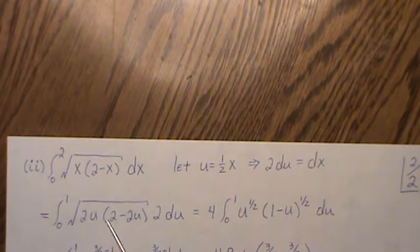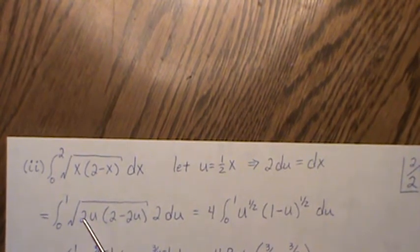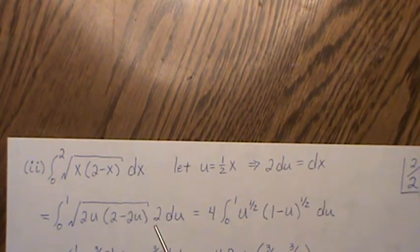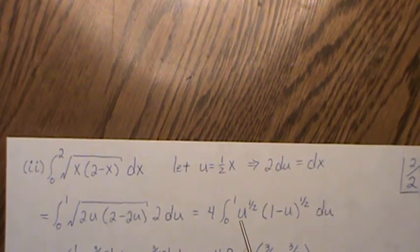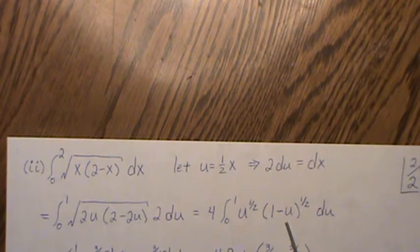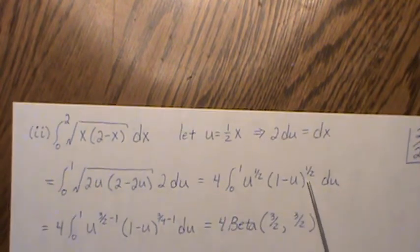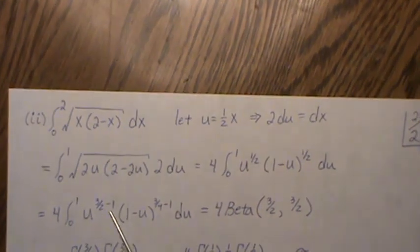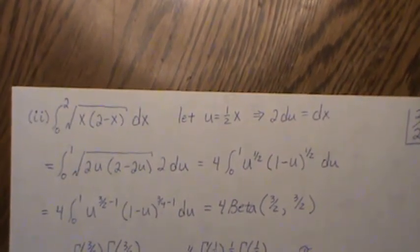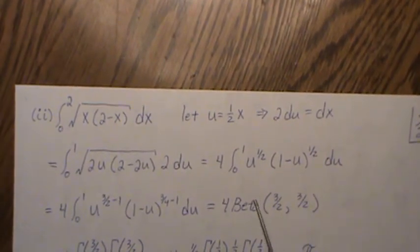Then the 2 can be factored out, 2 times 2 is 4. Square root, bring it out, and then times this 2, that's where we get the 4. So this is u to the 1/2 and 1 minus u to the 1/2. And then if we want to write it something minus 1 to make it look easier like a beta distribution, then we get this.